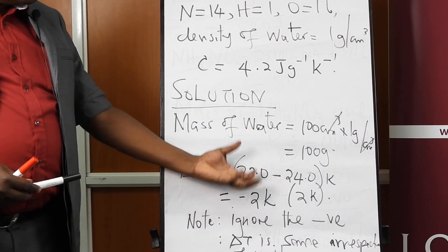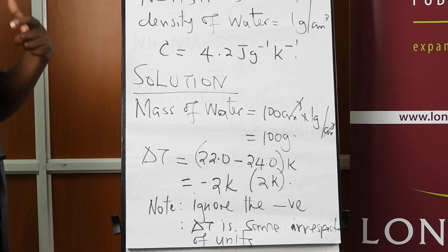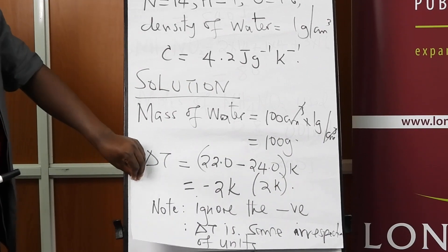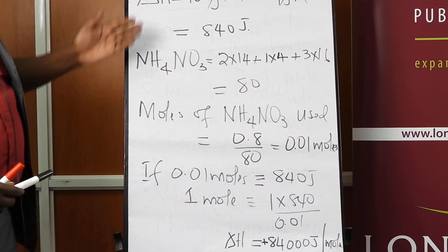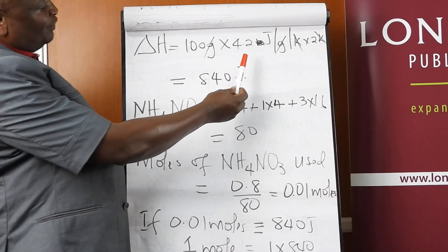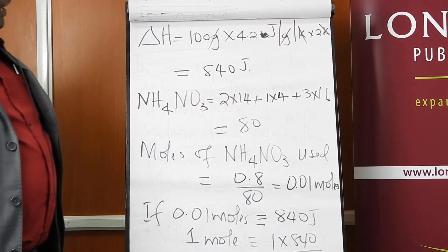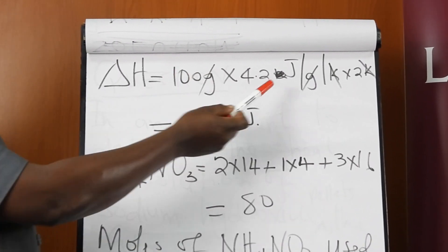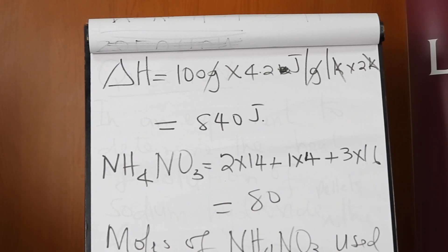If the temperature change is negative, ignore the sign for now but keep it in mind as it tells you the kind of reaction taking place. Substituting into the formula — note that c was given as 4.2 J/g/K, so mass must remain in grams — you substitute into delta H = mcΔT and get 840 joules.